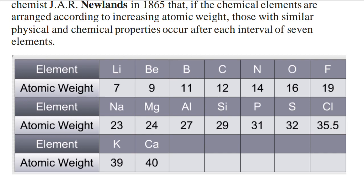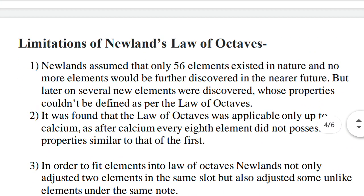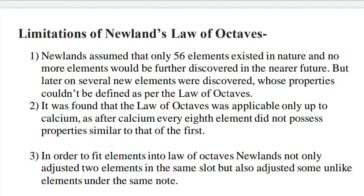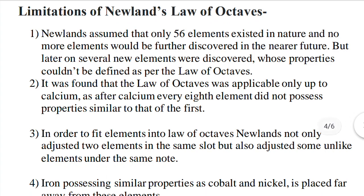Limitations of Newlands' Law of Octaves: First, Newlands assumed only 56 elements exist in nature and that no new elements would be discovered in the future. However, several new elements were later discovered whose properties could not be explained by the Law of Octaves. Second, the law was applicable only up to Calcium.